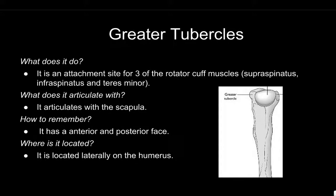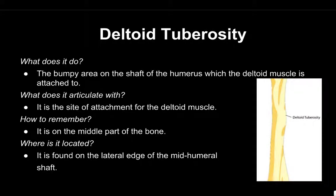The greater tubercle is an attachment site for three of the rotator cuff muscles. It articulates with the scapula. You can remember it by the fact that it has an anterior and posterior face. It is located laterally on the humerus.